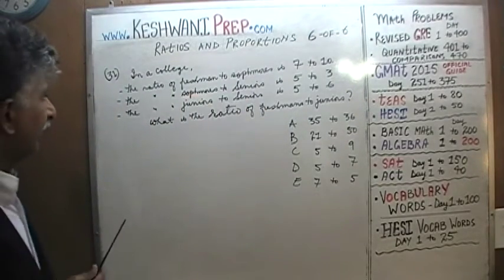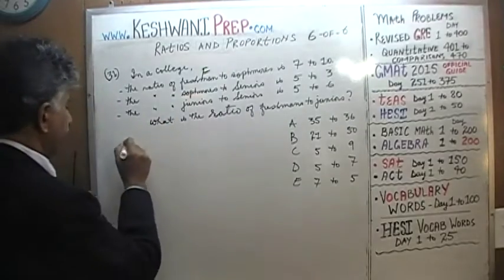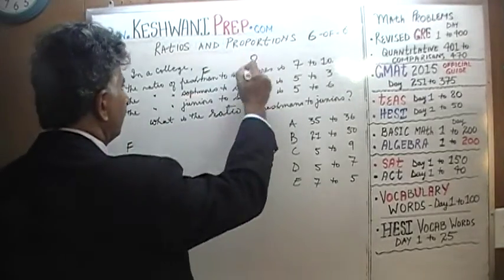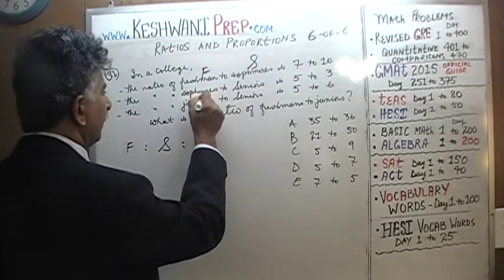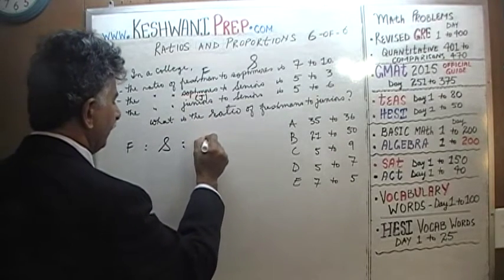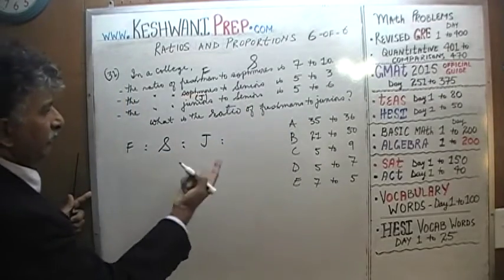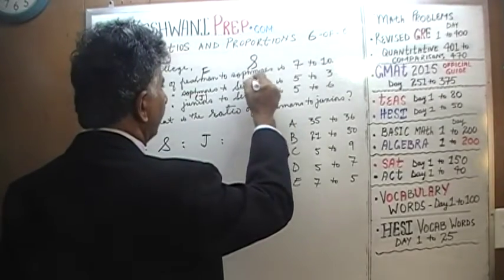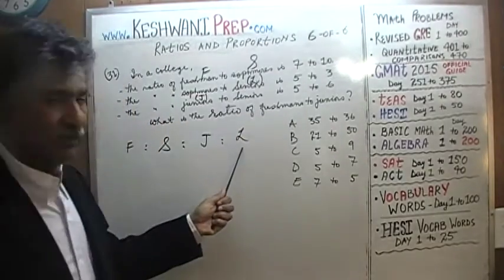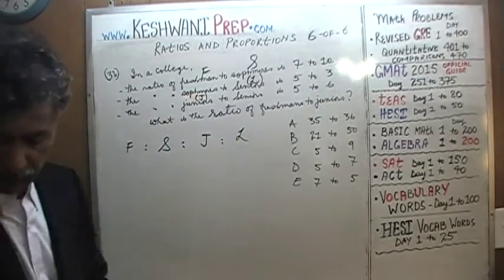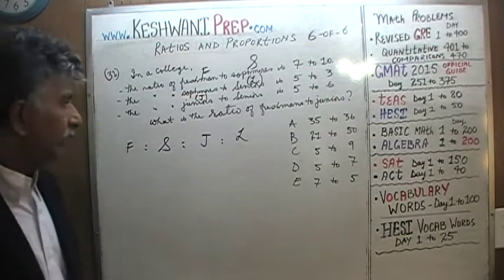First of all, we need to label our categories. We have freshmen — let's call them F. We have sophomores — let's call them S. Then we have juniors — J for juniors. And we can't use S again for seniors since we already used it, so I'm going to use L for seniors, L being the last year of college. Now that we have our labels sorted out, we can begin our process.